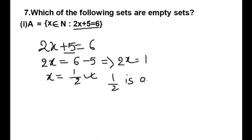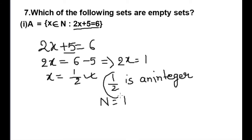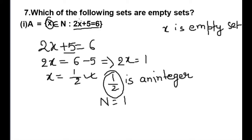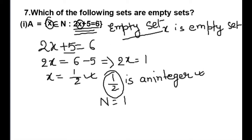1/2 is not a natural number. Natural numbers start from 1. So 1/2 is not a natural number — it is not even an integer. Therefore x gives a null set. There is no natural number who can satisfy this equation. An integer could satisfy it, but there is no such natural number, so the first set A is an empty set.